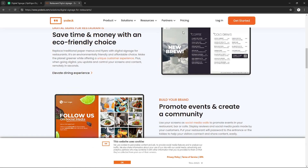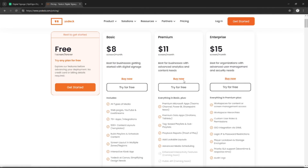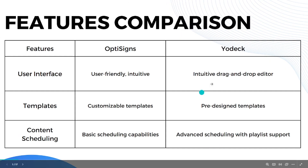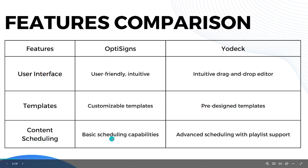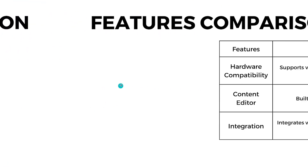Let's start with the features comparison. When it comes to user interface, OptiSigns has a user-friendly and intuitive interface, while Yodeck also has an intuitive drag-and-drop editor. For templates, OptiSigns offers customizable templates while Yodeck has pre-designed templates. For content scheduling, OptiSigns has basic scheduling capability while Yodeck has advanced scheduling with playlist support.